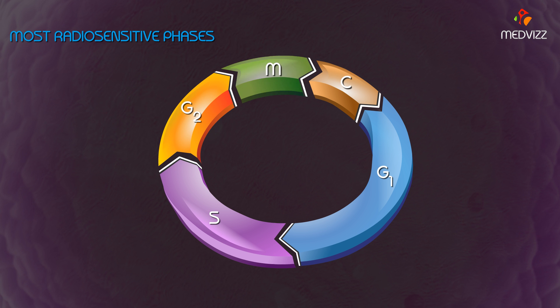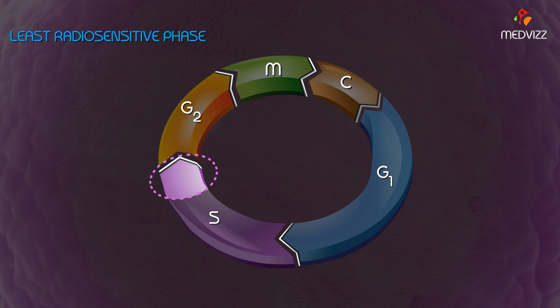The most radiosensitive phases are the G2 phase and mitosis. The least radiosensitive phase is the latter part of the S phase.